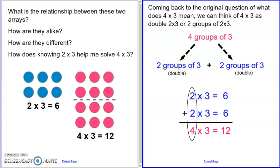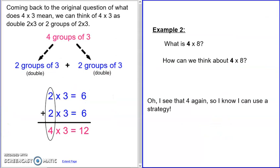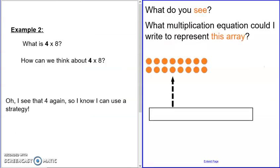Let's look at another example, because using the word double and twice can get confusing. Here's our next example: what is four times eight? How can we think about it? Pause the video for a minute and just picture — what does four times eight look like to you? I see that four again, so I know I can use a strategy. What do you see when you look at this array? What multiplication equation could you write to represent this array? Pause the video now.